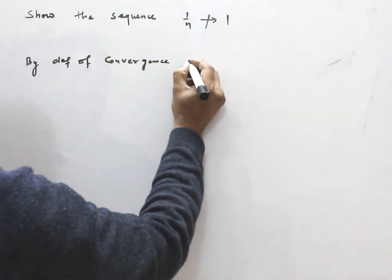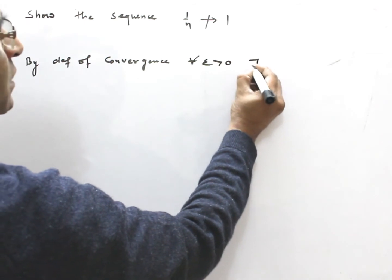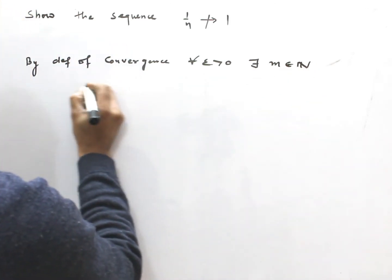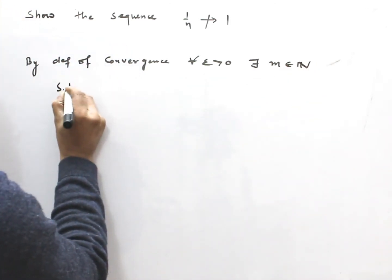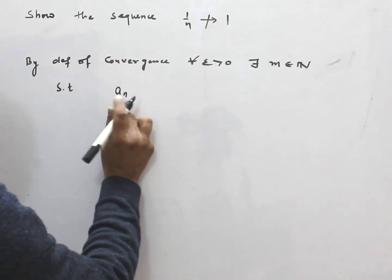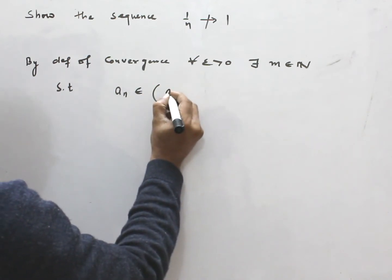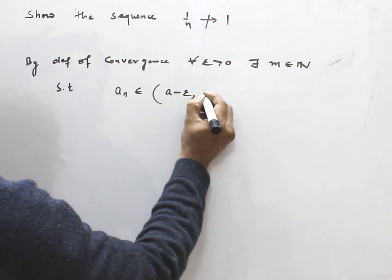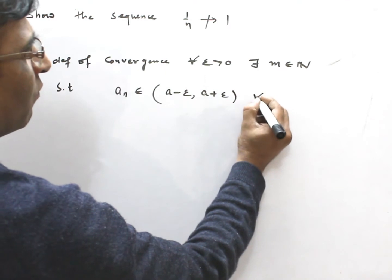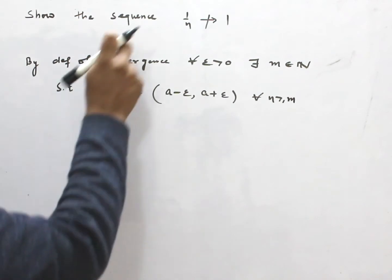for all epsilon > 0, there exists some m in N such that all terms a_n of the sequence belong to the neighborhood of a after n ≥ m. In this case,